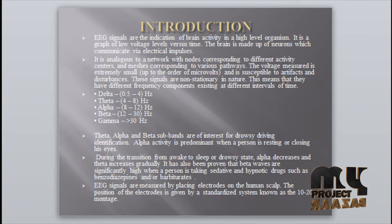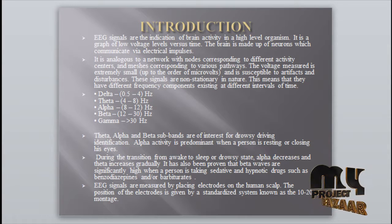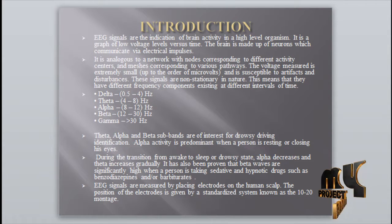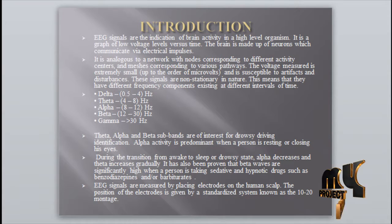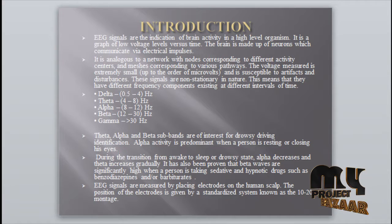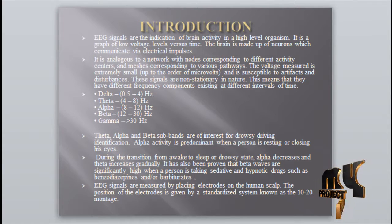The five EEG sub-bands are: delta 0.5 to 4 Hz, theta 4 to 8 Hz, alpha 8 to 12 Hz, beta 12 to 30 Hz, and gamma greater than 30 Hz.